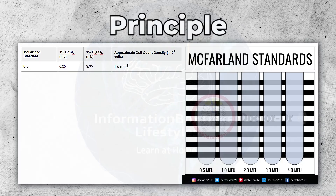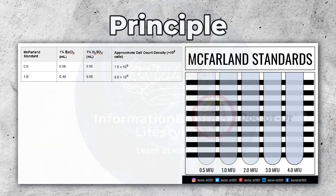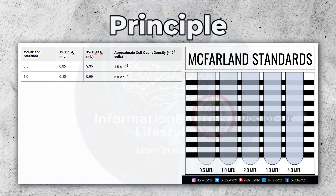The 0.5 McFarland Standard corresponds to an approximate cell count density of 1.5 × 10⁸ cells. McFarland Standard 1.0: mix 0.10 milliliters of 1% barium chloride with 9.90 milliliters of 1% sulfuric acid. This corresponds to an approximate cell count density of 3.0 × 10⁸ cells.